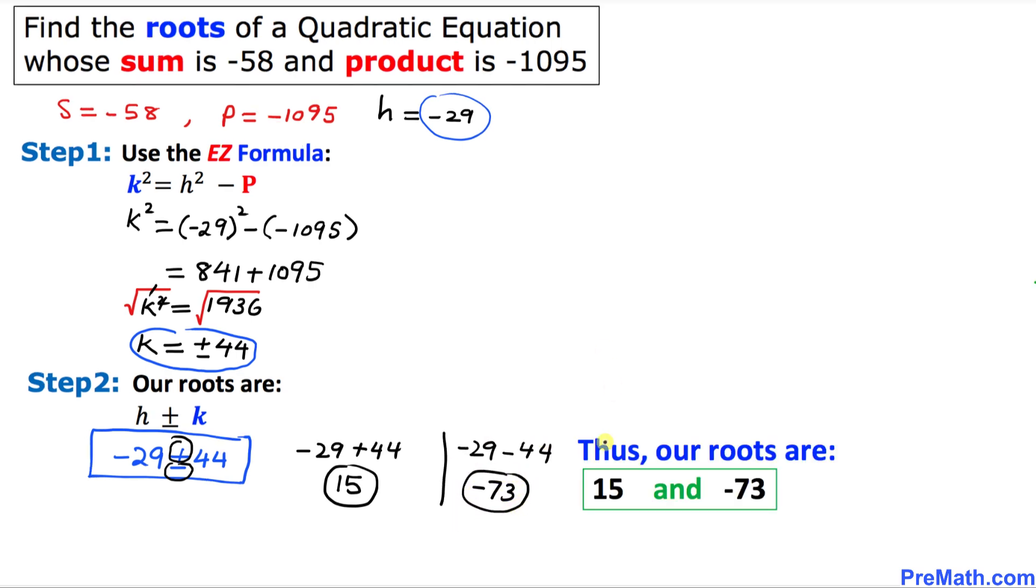So our roots are 15 and negative 73. And if we add them we are going to get negative 58, and if we multiply them we are going to get negative 1095.